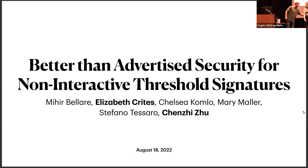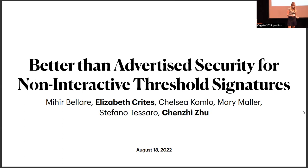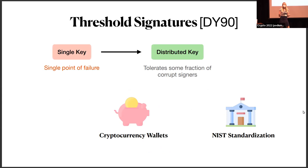I'm going to be talking about the security of non-interactive threshold signatures. This is joint work with Mihir Bellare, Chelsea Comolo, Mary Muller, Stefano Tesaro, and Chenjui Su, who will be my co-speaker. Threshold signatures allow multiple parties to jointly sign a message where some threshold of them is required to sign. This is important for distributing trust, because a single key represents a single point of failure, but distributing the key amongst multiple parties allows us to tolerate some fraction of corrupt signers.